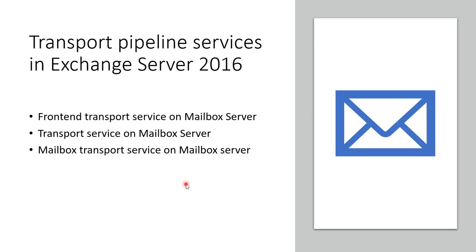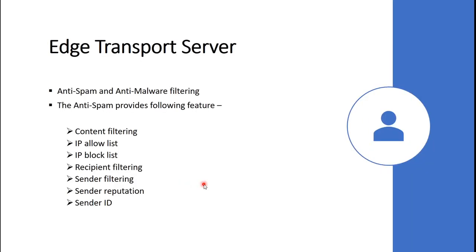The transport service defines how mail flow occurs in your Exchange organization. We will see detail about transport pipeline services in the mail flow video. Now we are going to see detail about the edge transport server role. Edge transport servers are optional for your organization and are designed to sit in the DMZ network to provide SMTP connectivity and mail flow in and out of your organization.